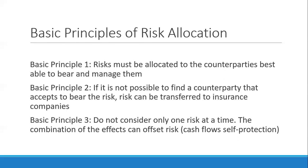The second basic principle is that if it is not possible to find a counterparty that accepts the risk, the risk can be transferred to insurance or insurers. Insurers bear some risks that are very difficult to mitigate — for example, fire or arson — risks that no one else will be willing to take. Since insurers are so diversified in the risks they handle, they may be able to bear that risk.